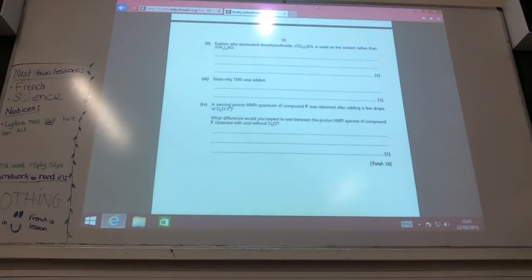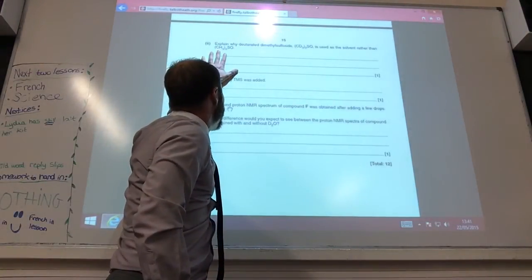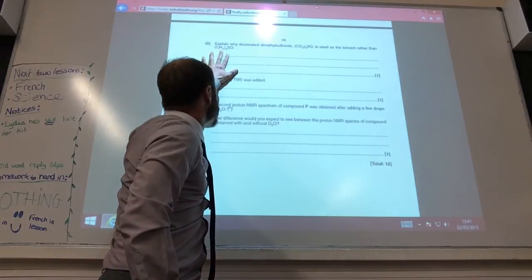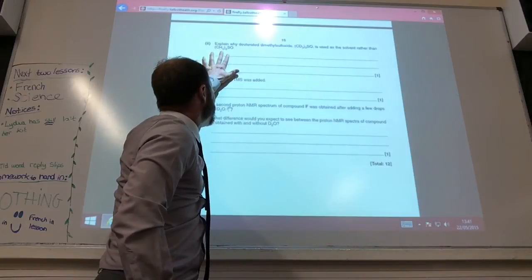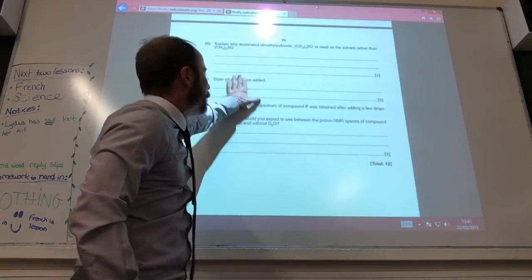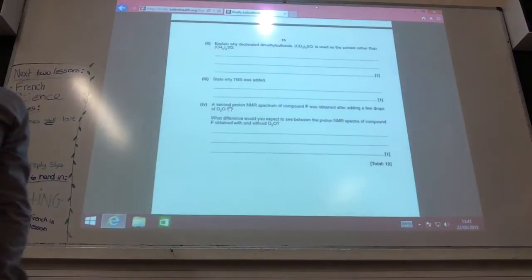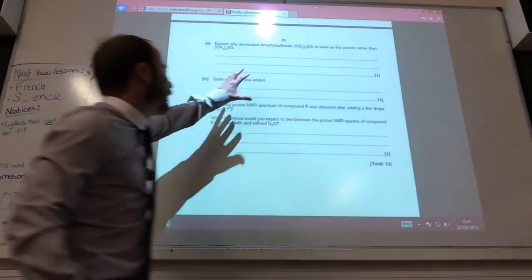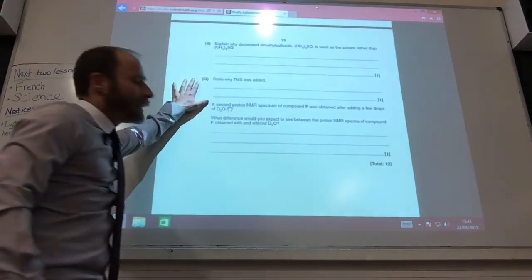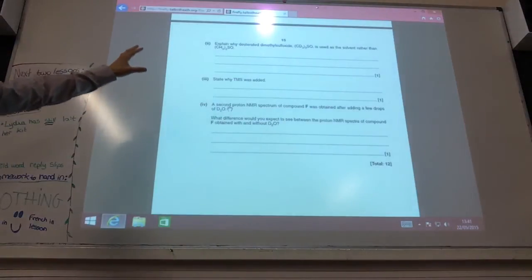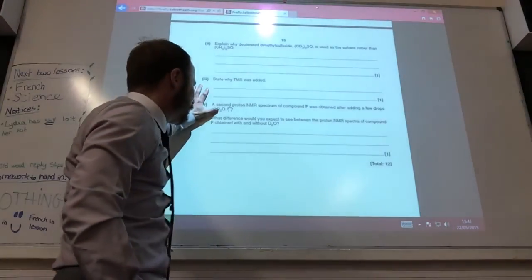Explain why deuterated dimethyl sulfoxide is used in solvent. If you use the 1H, the normal solvent, then you would also have a massive solvent peak for that. So it's because it doesn't give us signal in the proton NMR. Why is TMS? TMS is used as the standard for chemical shift measurement.